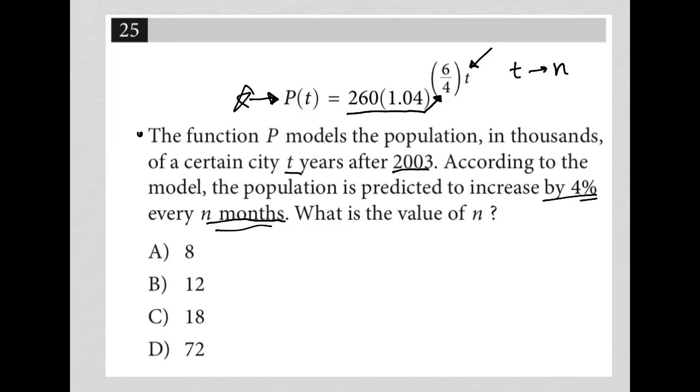What is the value of n for what? According to the model, the population is predicted to increase by 4% every n months. So we want to figure out how many months does it take for this population to increase by 4%?